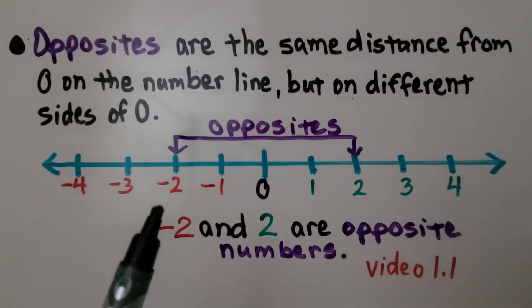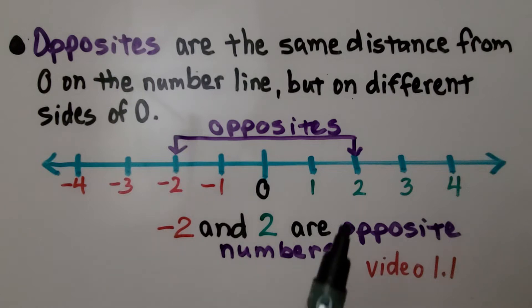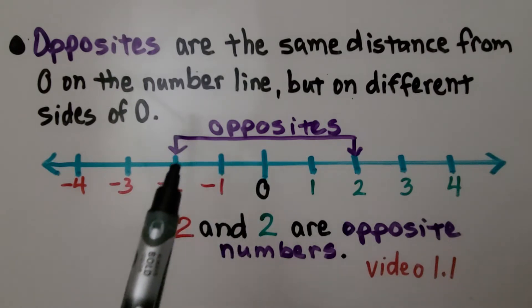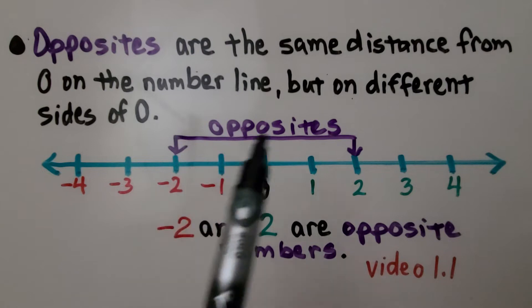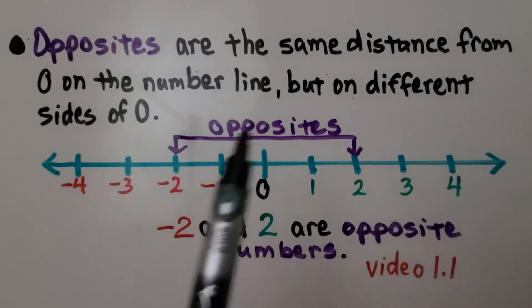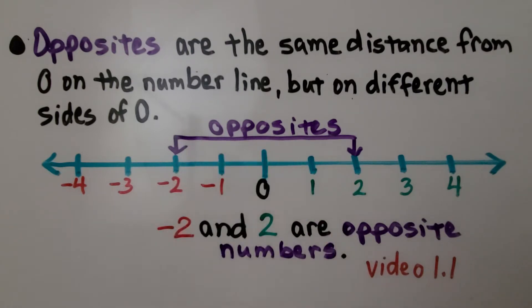Negative two and two are opposite numbers. They're both two jumps away from zero on different sides of zero. We learned about that in video 1.1.